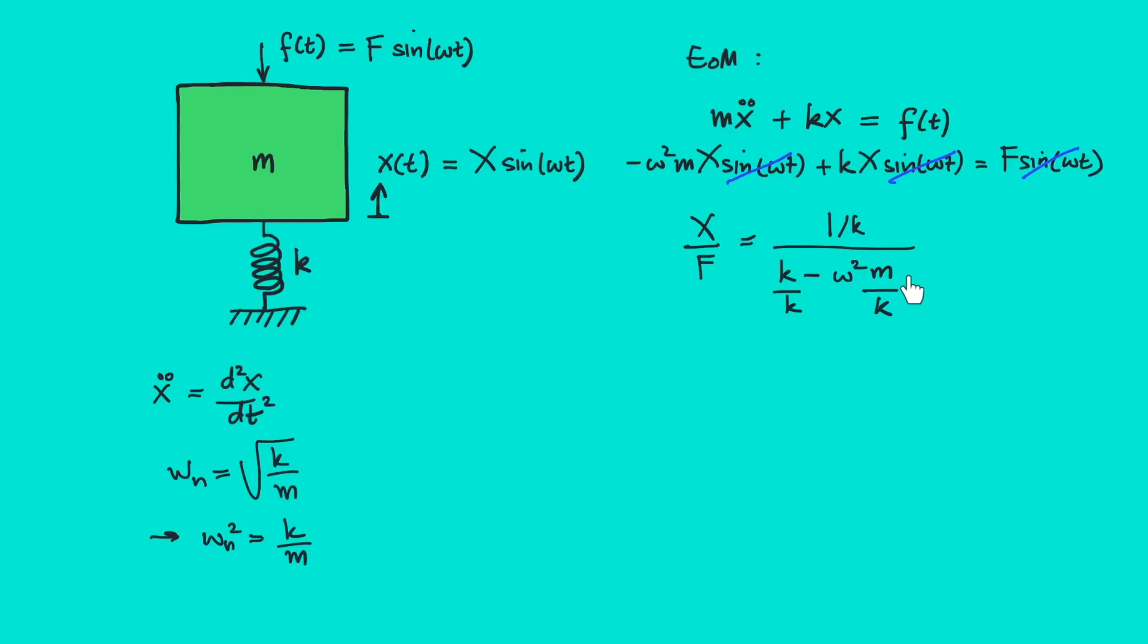Where this term m/k is actually 1 over ωₙ². So we will then have 1/k over (1 - ω²/ωₙ²).